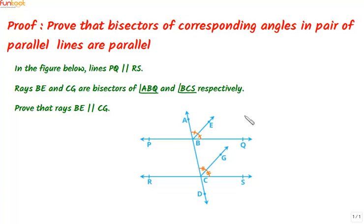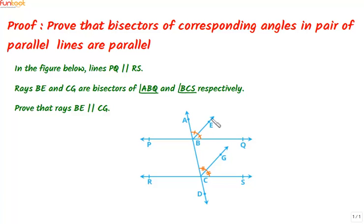Let's prove that bisectors of corresponding angles in a pair of parallel lines are also parallel. Here is our figure, in which PQ is parallel to RS. BE and CG are bisectors of angle ABQ and angle BCS respectively, and we have to prove that BE is parallel to CG.